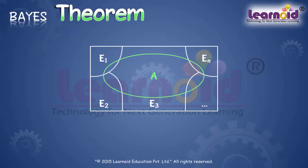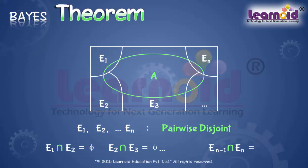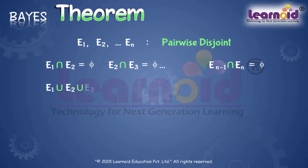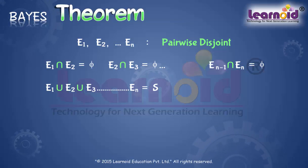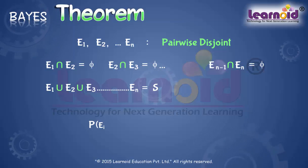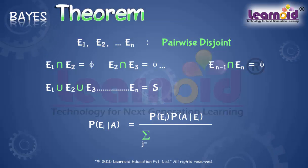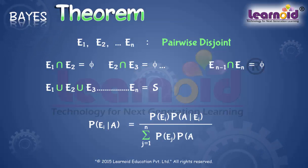Bayes' Theorem states that if E1, E2, and so on up to En are n non-empty events constituting a partition of sample space S, and A is any event of non-zero probability, then the probability of any event Ei in the partition space, subjected to the occurrence of A, is equal to P(Ei) times P(A|Ei), divided by the summation over j from 1 to n of P(Ej) times P(A|Ej).